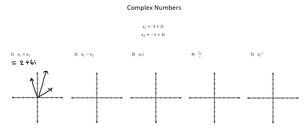What we see is that the geometrical representation of adding two complex numbers is represented by the addition of two vectors. I can confirm using the parallelogram rule that this resultant vector is the addition of two vectors. Thus, the addition of two complex numbers is represented geometrically as the addition of two vectors.